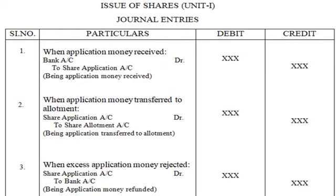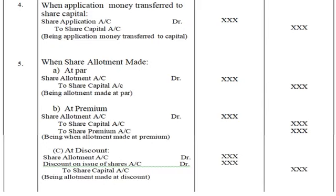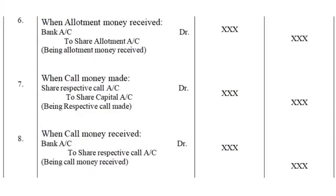Journal entries with regard to the issue of shares: first, when application money is received — bank account debit to share application account (being application money received). Second, when application money is transferred to allotment — share application account debit to share allotment account. Third, when excess application money is rejected — share application account debit to bank account. When application money is transferred to share capital — share application account debit to share capital account. When share allotment is made at par — share allotment account debit to share capital account. When it is made at premium — share allotment account debit to share capital and share premium account. When it is made at discount — share allotment account debit to share capital account. When allotment money is received — bank account debit to share allotment account.